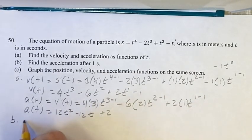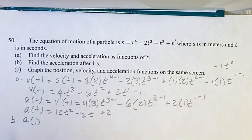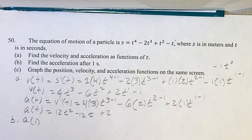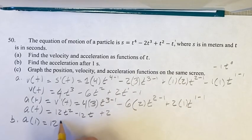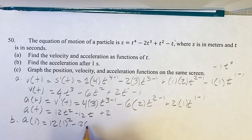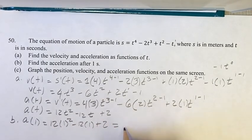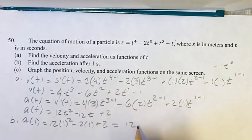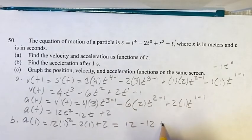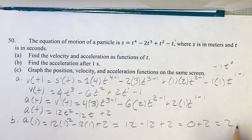Now finding the acceleration after one second, we have our acceleration function, so we just have to plug in one for t. We get twelve times one squared minus twelve times one plus two. Twelve times one squared is twelve times one is twelve. Twelve minus twelve times one is minus twelve, plus two is equal to zero, plus two is equal to two.